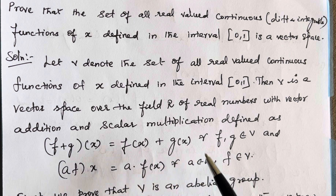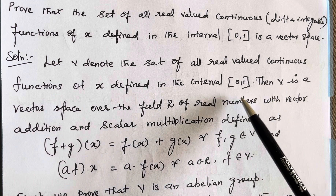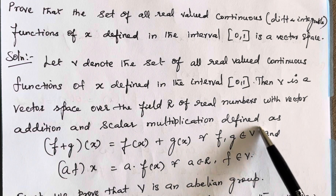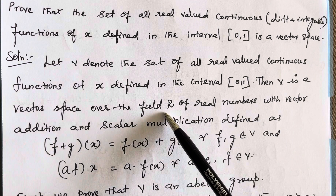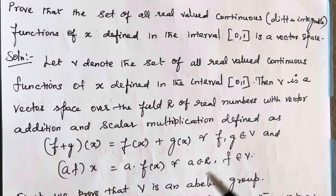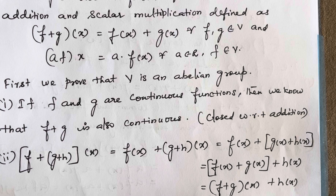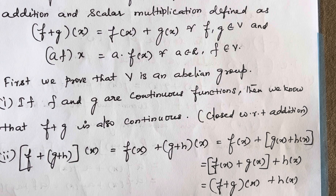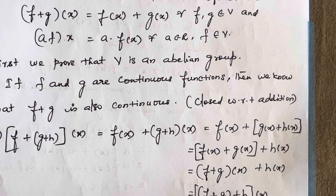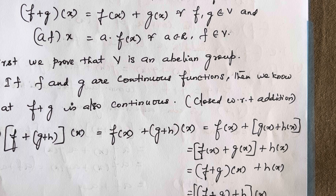The field is going to be the set of all real numbers, which is R. Now we have to show that the set V over the field R of real numbers is a vector space. We need to prove that first it is an abelian group. For that, we have to show it is closed, associative, that identity exists, and inverse exists, as well as the commutative property. When it satisfies all of these, we call the given set an abelian group.